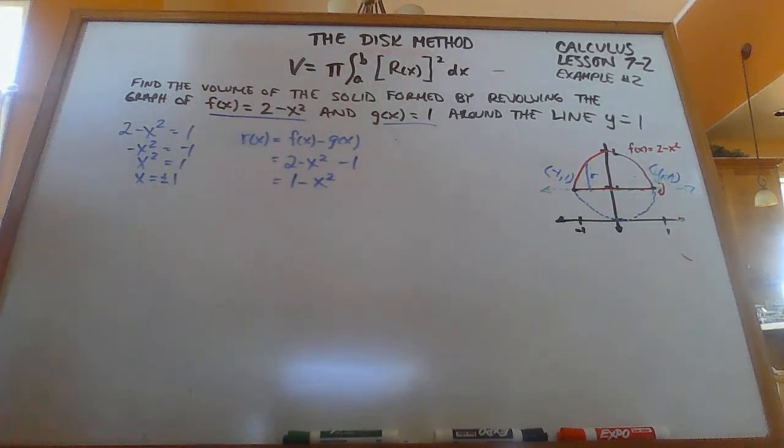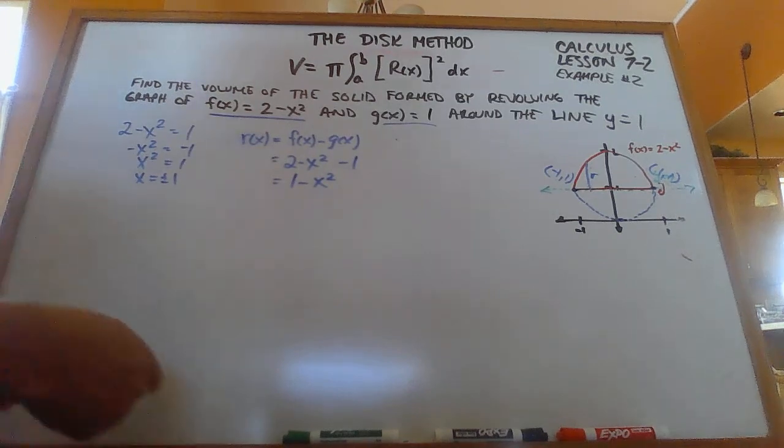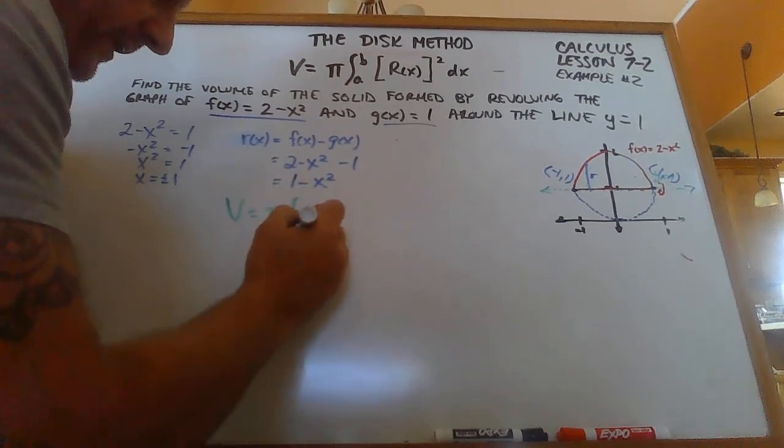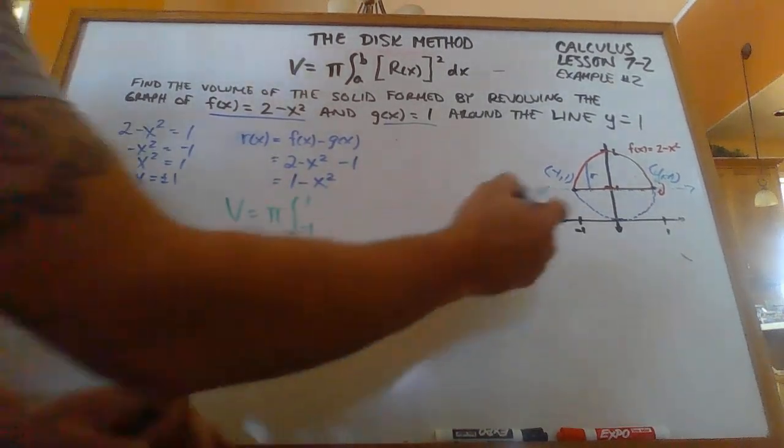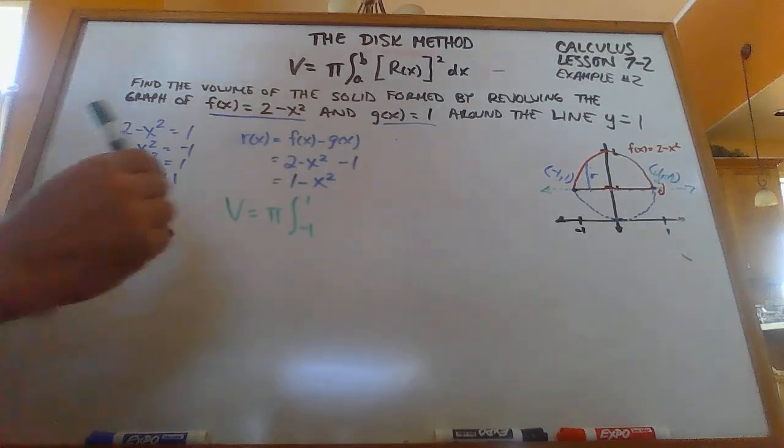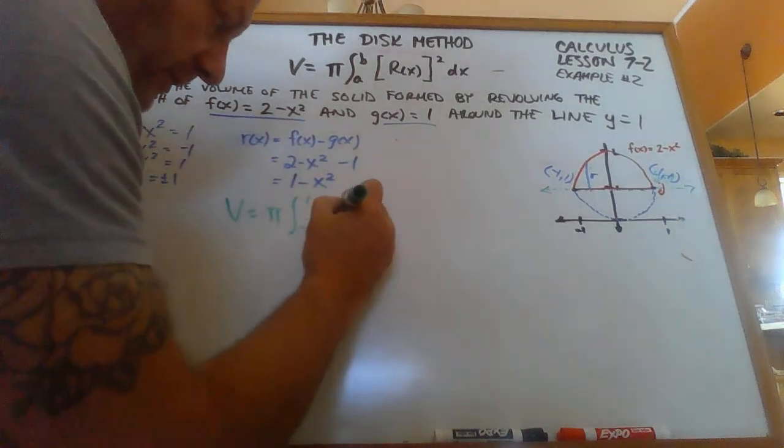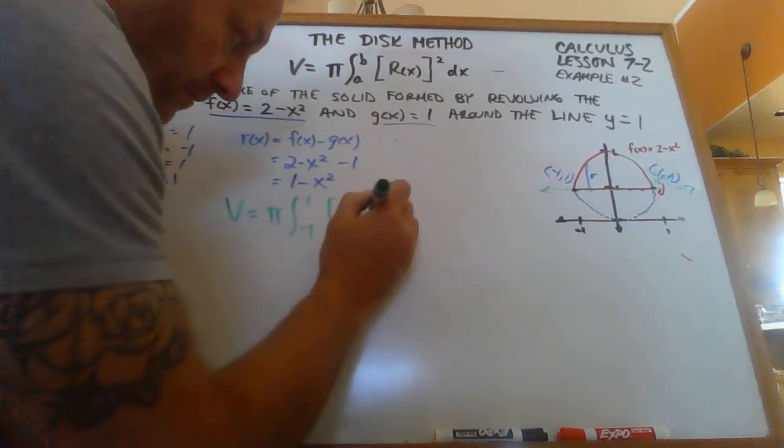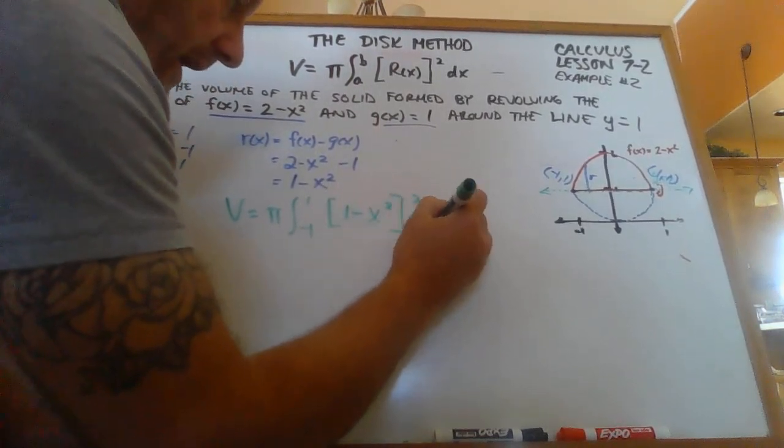And now we can jump into the volume part of this thing. And so the volume is going to be pi times the integral from negative 1 to positive 1, because we're going from here to here. And it's going to be r(x) squared. So it's going to be 1 minus x squared squared dx.